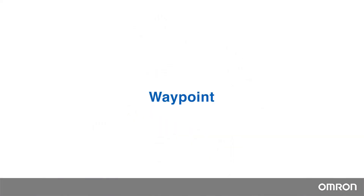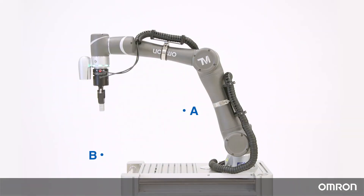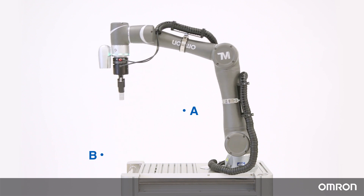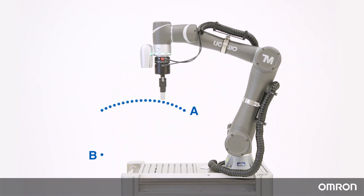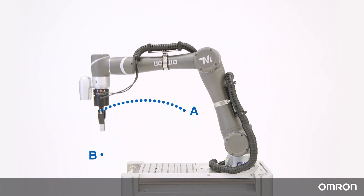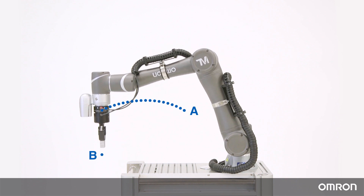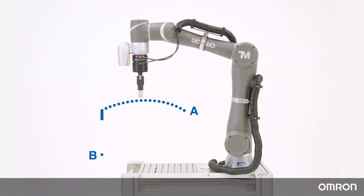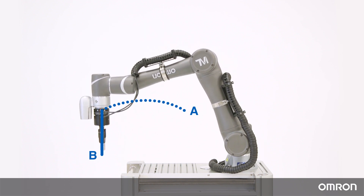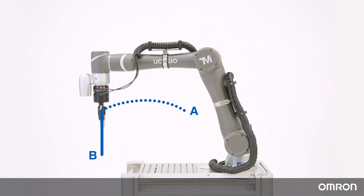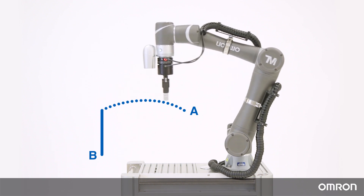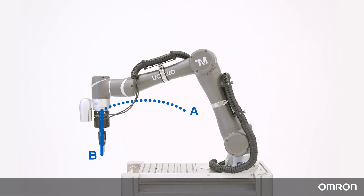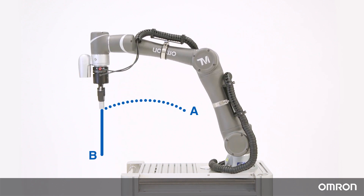Now let's discuss waypoint motion. Waypoint motion is a movement with two steps. The first step uses point-to-point motion to position the end effector above point B with an offset on the z-axis. The second step uses line motion to move the end effector down to point B. This motion occurs in the z-axis only. The approach height can be adjusted as a percentage of the total z-axis travel.